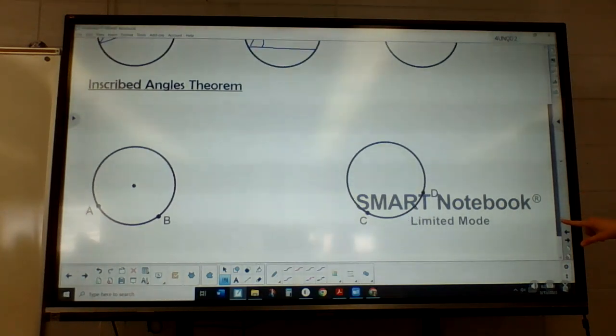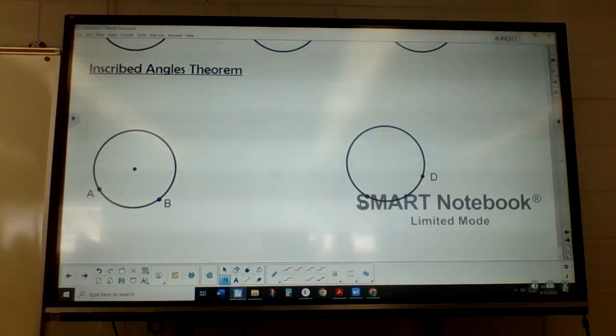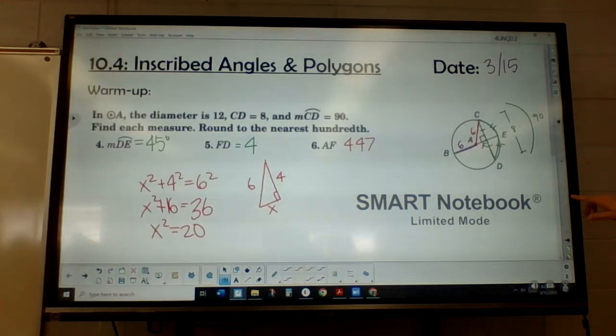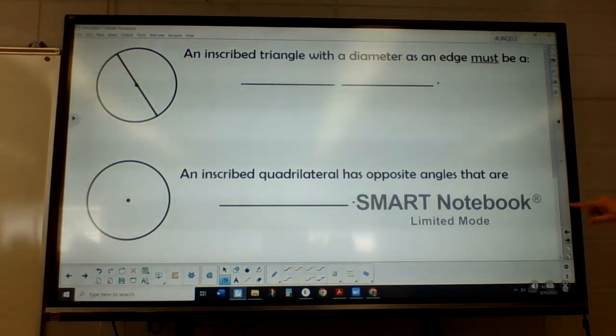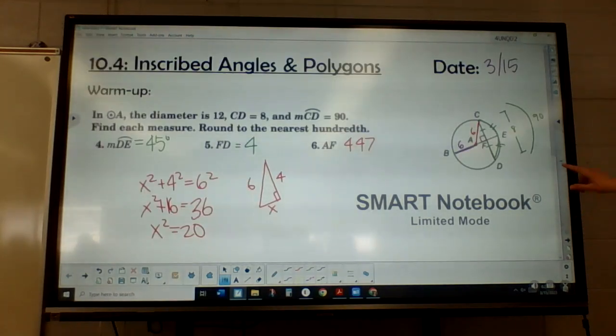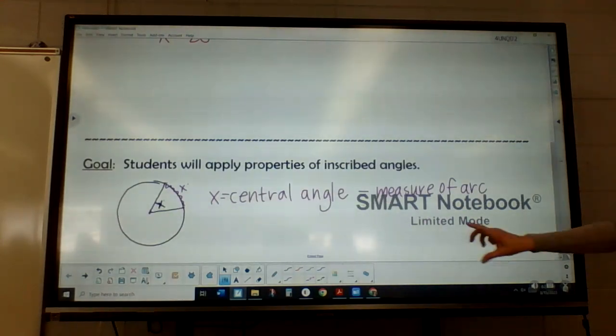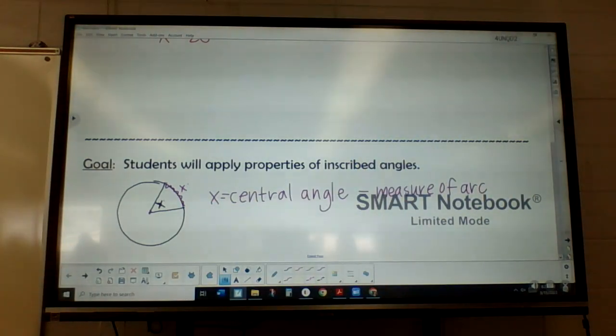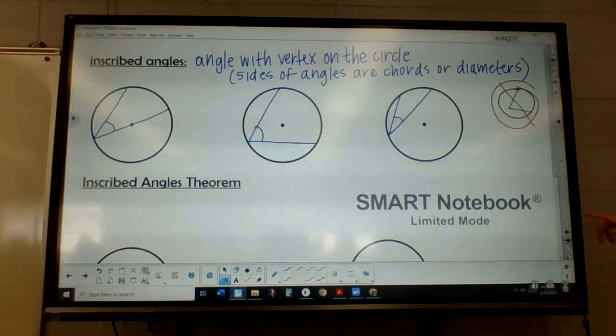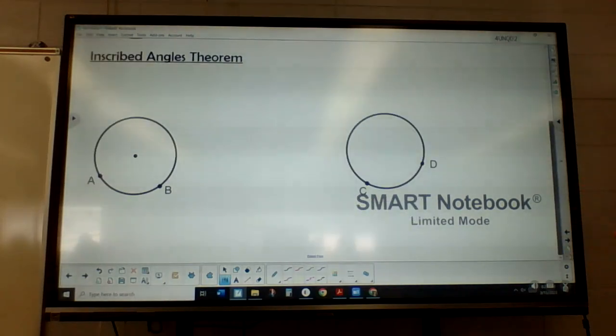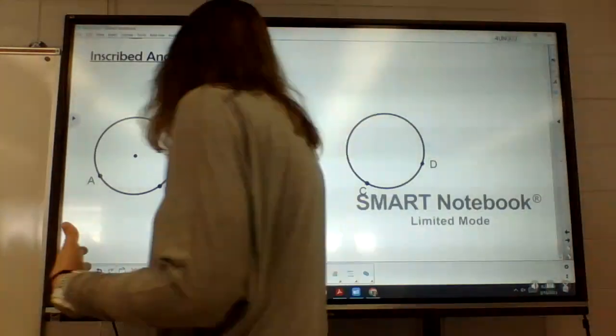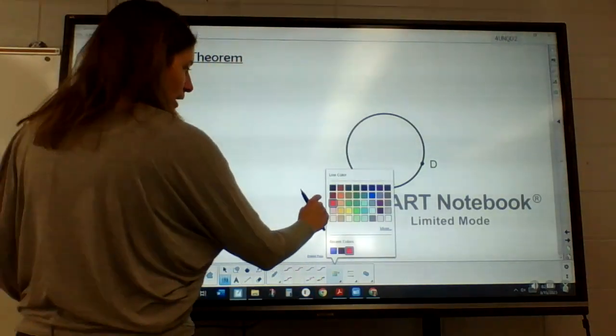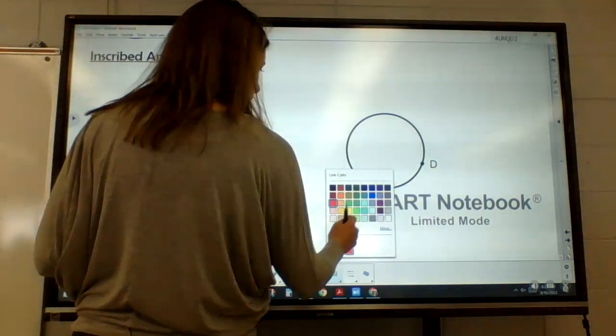So we're going to learn a couple of rules here that involve these inscribed angles and what I know about the arc. So again, going back to our central angle, the angle's the same measure as the arc. That's not true for inscribed angles. So for our inscribed angles, it's a little bit different. It's very close, but it's not quite the same. So we're going to draw this.